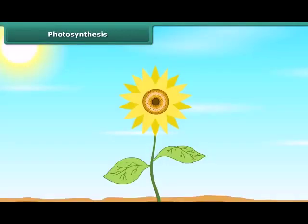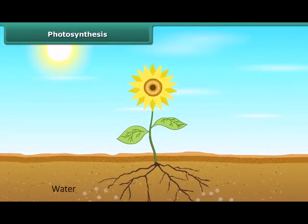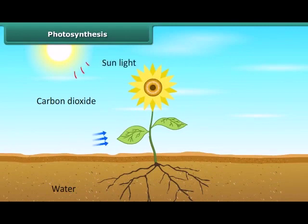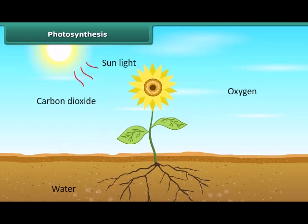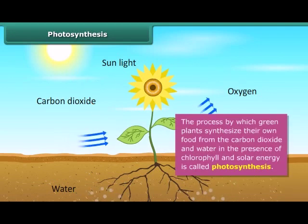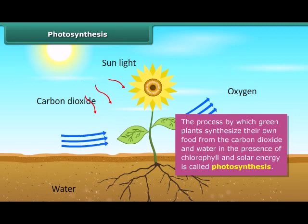As we know that green plants synthesize their own food. But do you know how they synthesize their own food? Actually, green plants make their own food by the process of photosynthesis. Photosynthesis is a process by which green plants synthesize their own food from carbon dioxide and water in the presence of chlorophyll and solar energy.